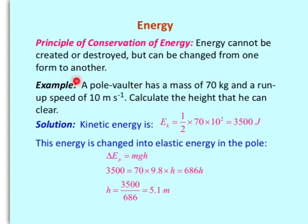Example: A pole vaulter has a mass of 70 kg and a speed of 10 meters per second. Calculate the height he can reach.